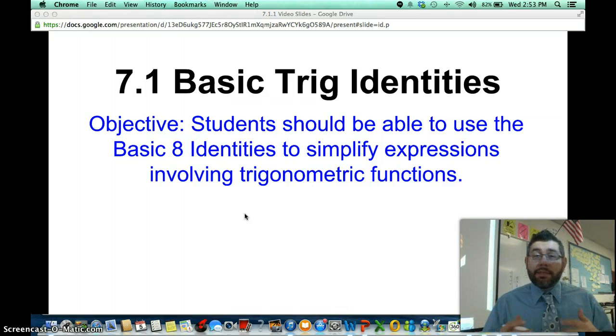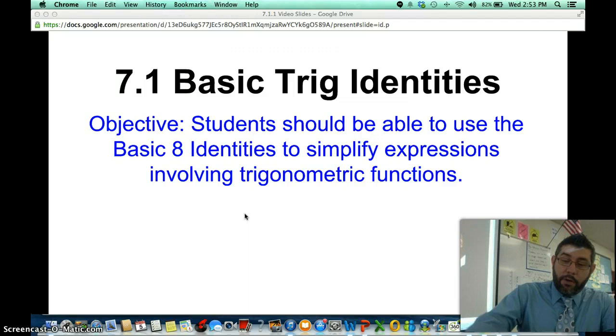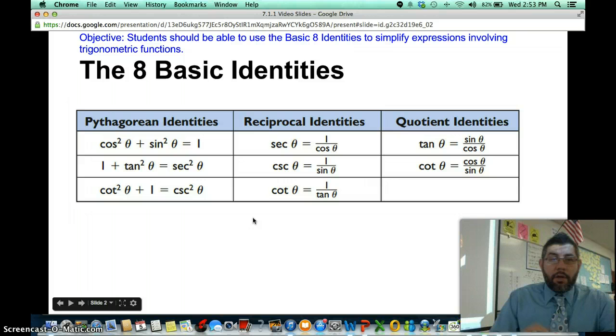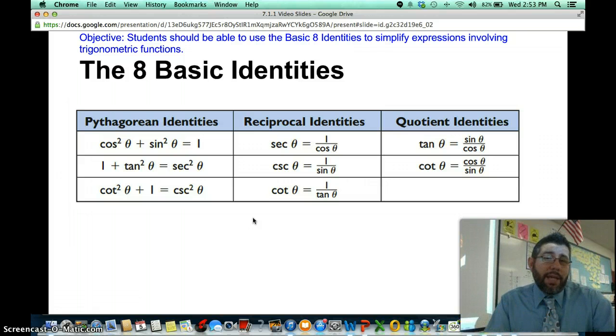Let's go ahead and get going. Make sure you write these things down and take a look at these examples. Here are the eight basic identities. You can write this down as a table in the format that I have here, or you can just write them down.